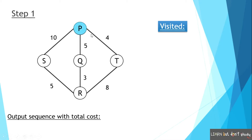First, we will visit P and mark it. If we use this path, we can say that S is an edge, Q is an edge, T is an edge. In these three edges, we have to find the lowest cost edge. In P, T is the lowest cost edge. So we visit T next. T is now visited.